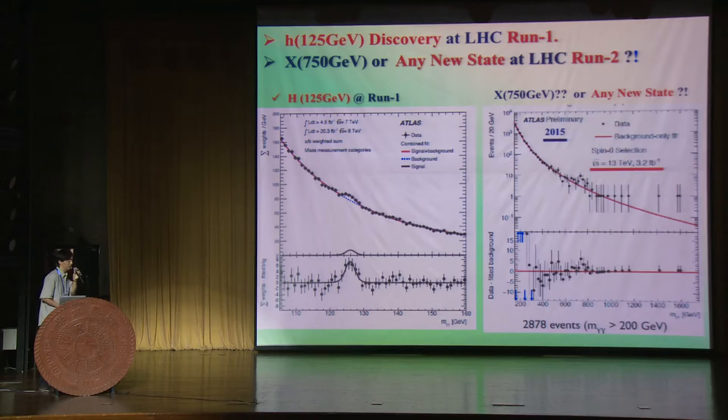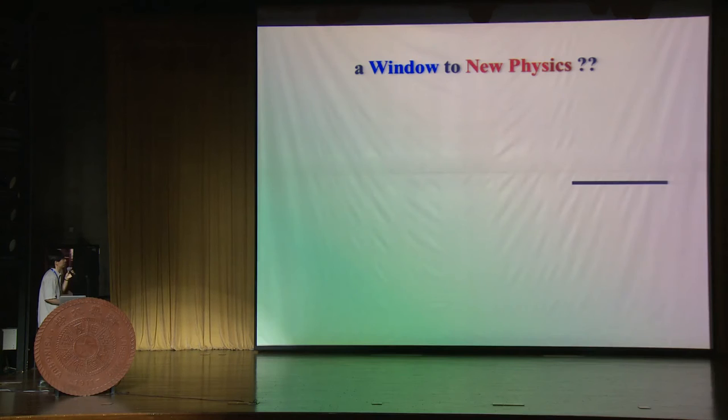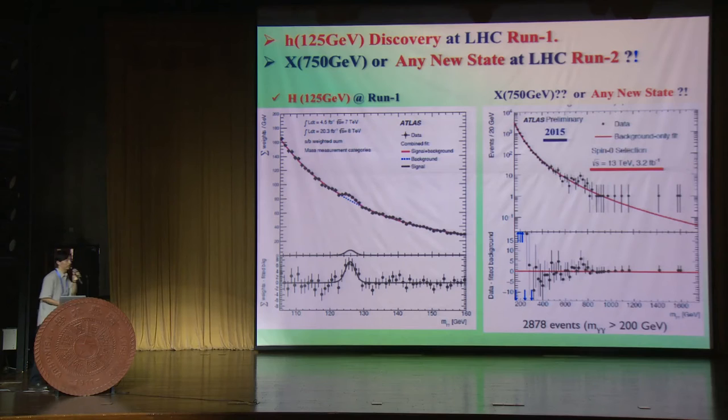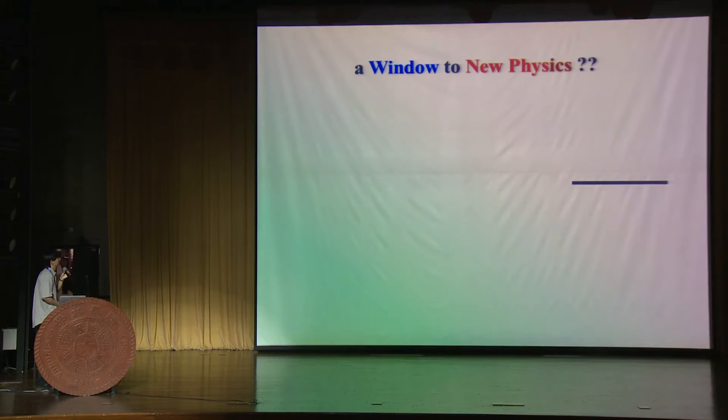By now each detector has something like 15 inverse femtobarns of Run 2 data — a factor of 5 more than what we had at the end of last year. So even though we are just before the ICHEP conference next week, there is more than about half a year of running this year, and we expect to double the data. That will give us more precise and firm indication on any possible new physics beyond this.